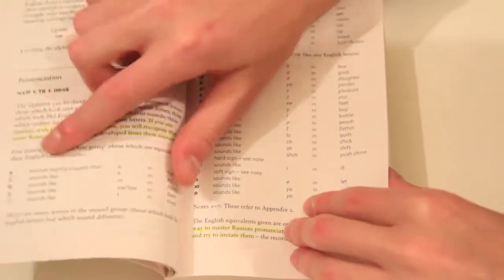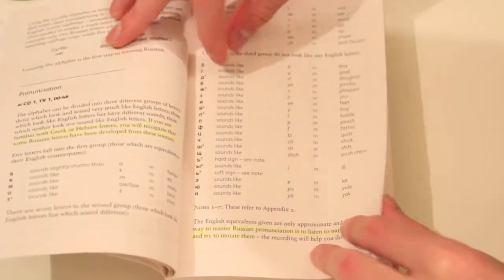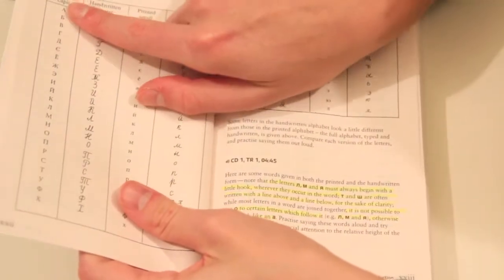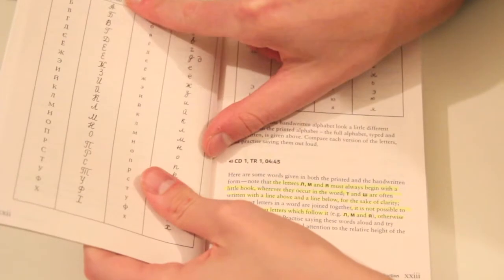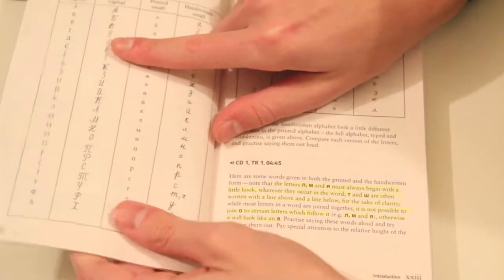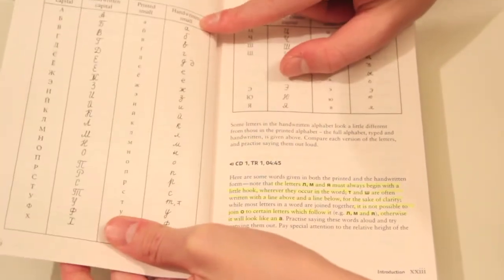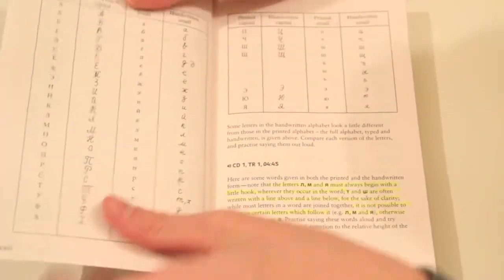Then you have the alphabet with capital letters in cursive form, then in printed small form, and then handwritten small form. So you have all you need to see and know how to read the alphabet.